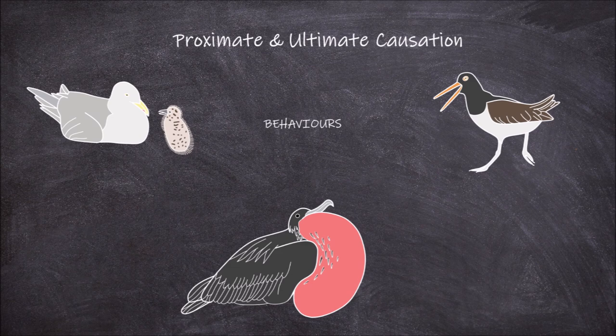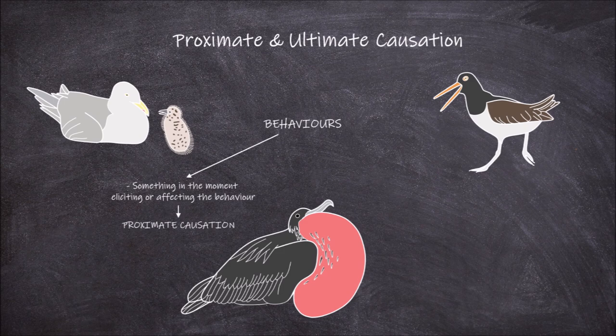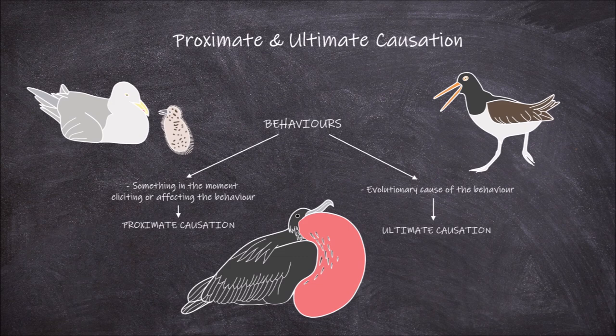These behaviors are caused by both something in the moment eliciting or affecting the behavior — this is called proximate causation — as well as an evolutionary cause. This is called ultimate causation and relates to the long-term factors such as selection pressures that have led to the behavior exhibited.